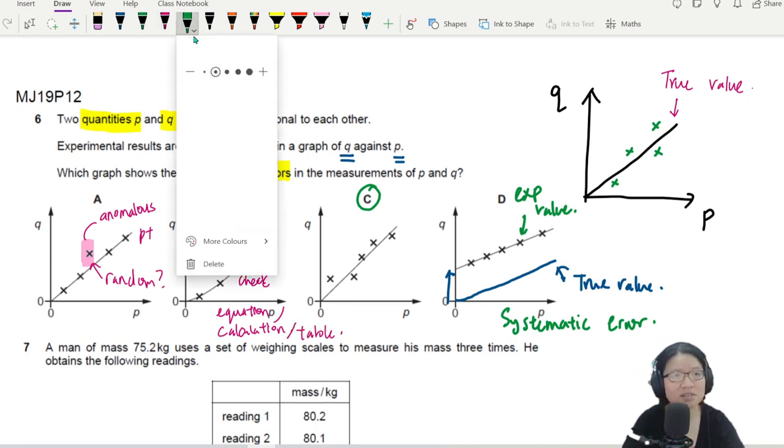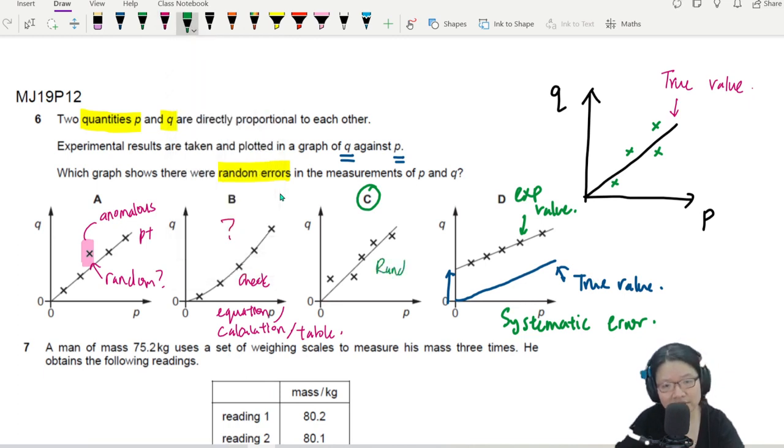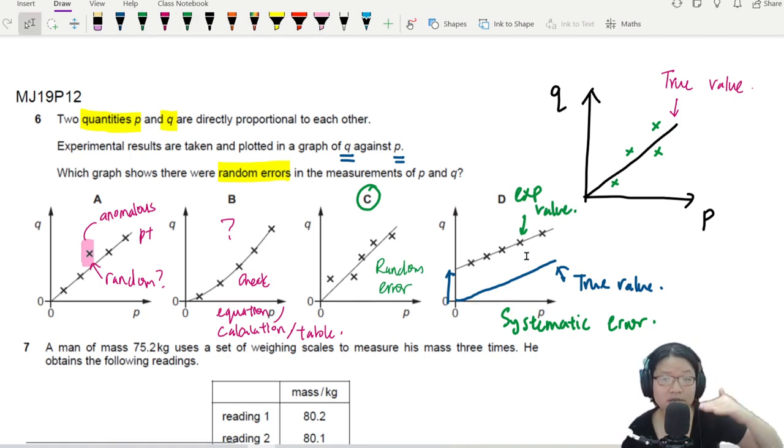Whereas for C, this is a type of random error. Random. Sometimes you get reading above. Sometimes you get reading below. Whereas D is a systematic error. Because your experimental value is always above.